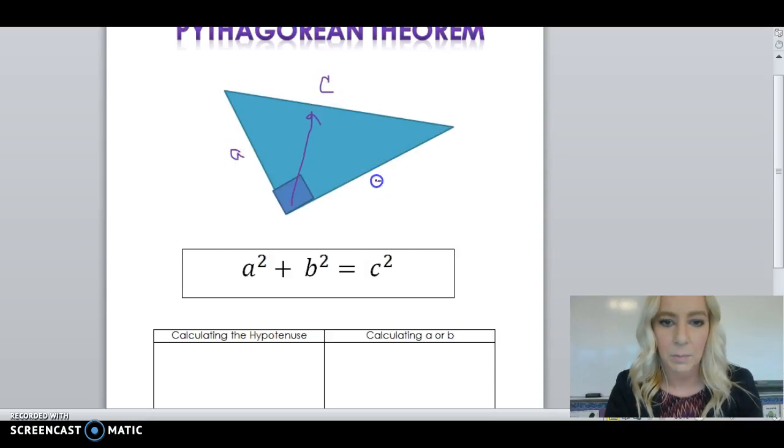And then, the two sides that make up the right angle are A and B. And these can be interchangeable. So, this could also be B, and this could be A. And applying order of operations, you'll still get the same answer.